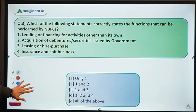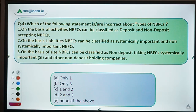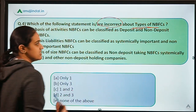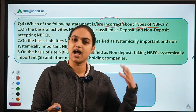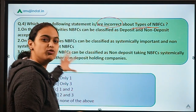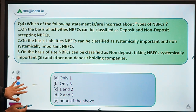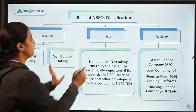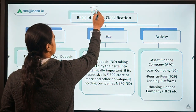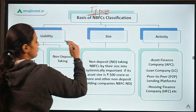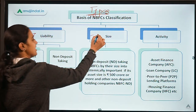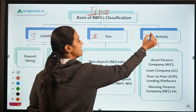Now let's move on to question number four, which asks: which of the following statements is or are incorrect about the types of NBFCs? There are different categories of NBFCs. Let's look at the categorization first. If you look at the different bases for categorizing NBFCs, there are three: first is liability, second is size, and third is activity.